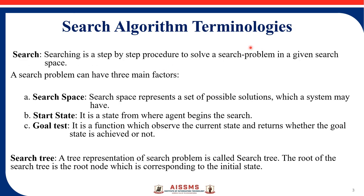Search algorithm terminology: searching is a step-by-step procedure to solve a search problem in a given search space, that is, the environment or state space. A search problem can have three main factors — search space, start state, and goal state. Search space represents a set of possible solutions. Start state is where the agent begins the search. Goal state is a function which observes the current state and returns whether the goal state is achieved or not.